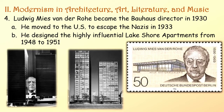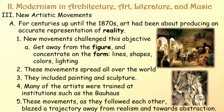The new artistic movements. For centuries up until the 1870s, art had been about producing an accurate representation of reality. New movements challenged this objective: let's get away from the figure and concentrate on the form—things such as lines, shapes, colors, lighting. These movements spread all over the world, including painting and sculpture, and blazed a trajectory away from realism and towards abstraction.